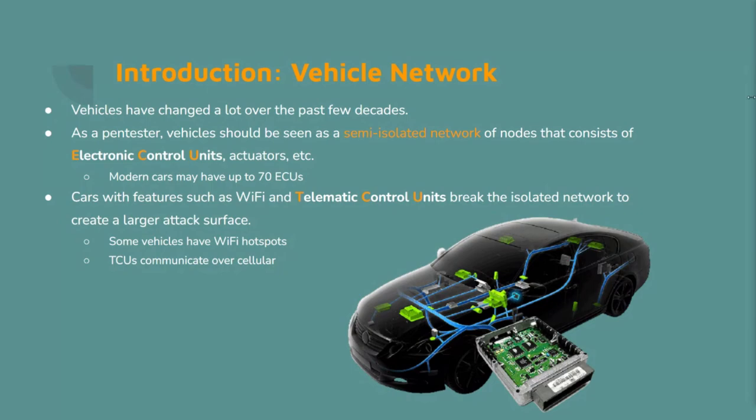When you first look at a vehicle, there are quite a few ways to interact with it: keys, physical keypads, additional distance and motion sensors, Bluetooth, USB, and onboard diagnostic ports — typically located near the steering column or glove box. These OBD ports are large plugs you can connect to. Cars with features like Wi-Fi hotspots or telematic control units that phone home break the isolated network to create a larger attack surface.